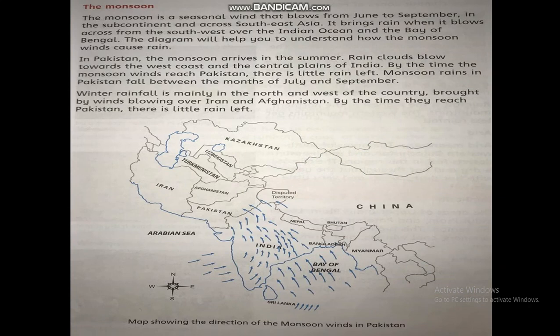Monsoon: Monsoon is a seasonal wind that flows from June to September in the subcontinent across South East Asia. A diagram will help you understand how the monsoon wind causes rain. In Pakistan, the monsoon arrives in summer. Rain clouds blow towards the west coast and the central plains of India. By the time the monsoon wind reaches Pakistan, there is little rain left. Monsoon rains in Pakistan fall between the months of July and September.